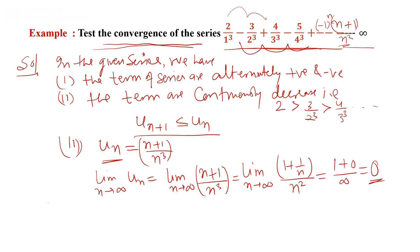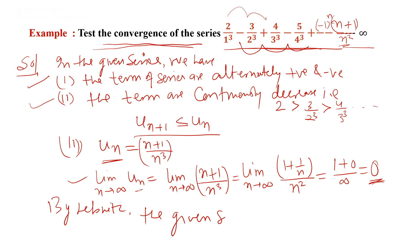By Leibniz's test: the terms of the series are alternatively signed, the terms are continuously decreasing, and the limit as n tends to infinity of the nth term equals 0. Therefore, the given series is convergent.